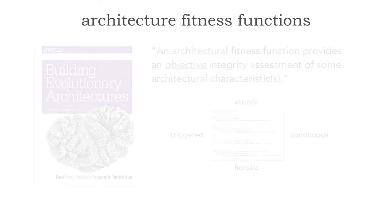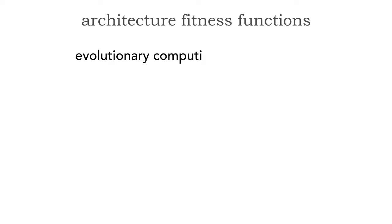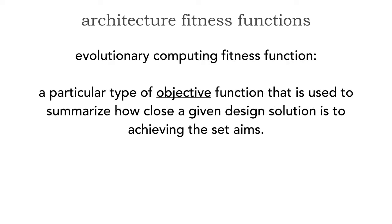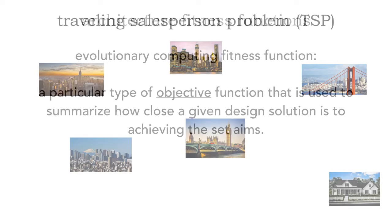The other aspect of an architecture fitness function, from evolutionary computing, is a particular type of objective function. That objective provides the mathematical basis of measurement used to summarize how close a given design solution is to achieving its set aims — in other words, are we close to achieving what we want to do? Let me show you some simple examples of a fitness function.